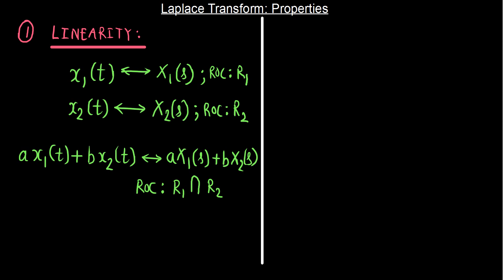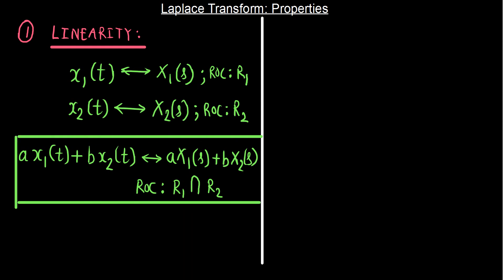That is the linearity property: a linear combination at the input gives a linear combination at the output. The region of convergence is going to be at least the intersection of R1 and R2 — meaning it could be greater than this intersection as well.